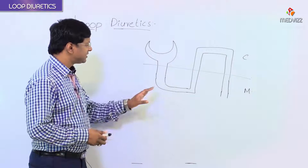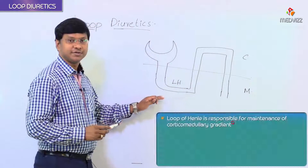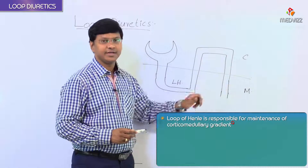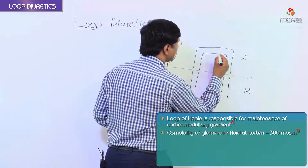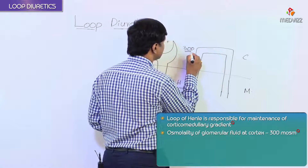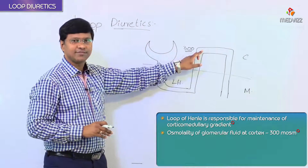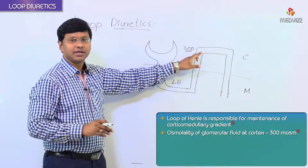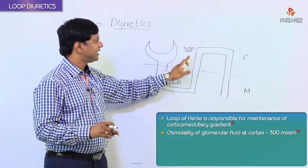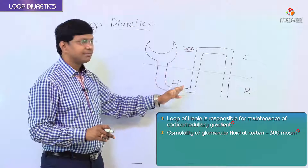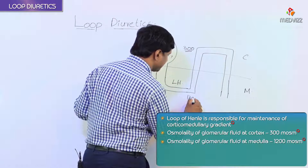The loop of Henle is responsible for maintenance of the corticomedullary gradient. At the cortex, the gradient is around 300 milliosmoles — that is the osmolality of the glomerular fluid at the level of the cortex, or at the level of the tubules in the cortex. As we come down into the medulla, the gradient is around 1200 milliosmoles.